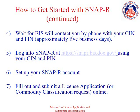When you submit via SNAP-R, BIS receives your license application within just a few hours, compared to the two-week period a paper export license application often takes to be received and put into the licensing system. SNAP-R can also be used to submit an official commodity classification request to BIS.